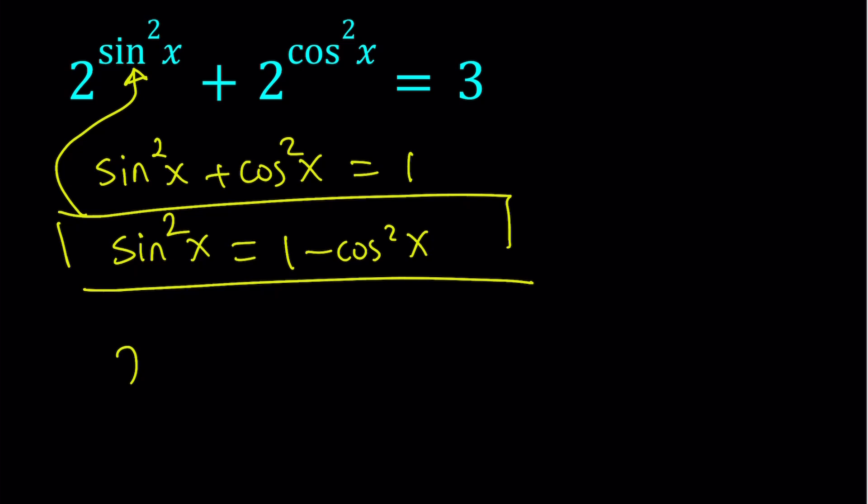Let's go ahead and do that. So we get 2 to the power 1 minus cosine squared x plus 2 to the power cosine squared x is equal to 3. Obviously, similarly, you could also isolate cosine squared and replace it with 1 minus sine squared. And it would give you pretty much the same thing. You would get the exact same solutions, but you would be solving a sine equation as opposed to a cosine equation. That would be the only difference.